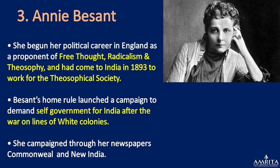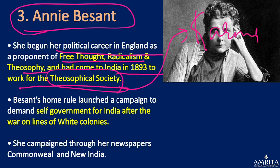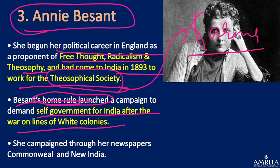The third personality is Annie Besant. She began her political career in England as a proponent of free thought, radicalism, and theosophy. She came to India in 1893 to work for the Theosophical Society, which was started by a Russian immigrant in the US. The Theosophical Society believes in concepts of Hinduism such as reincarnation and karma, and set up their head office in Adyar, Madras. She eventually became the president of the Theosophical Society.